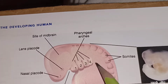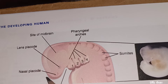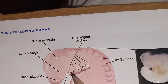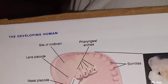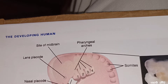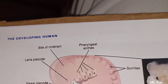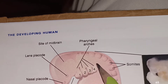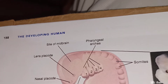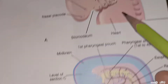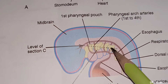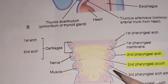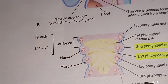So basically, this embryo — you can see it has prominences 1, 2, 3, and 4. We will discuss about these. If I slice it from here, these prominences are called the pharyngeal apparatus. If I cut it from here, you will see an internal diagram.